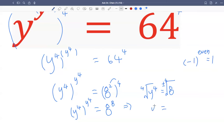Let's simplify. So y equals plus or minus the fourth root of 8. Can we simplify this? We can leave it like that. Because 8 is 2 cubed, we won't be able to simplify it further. Just leave it like that.